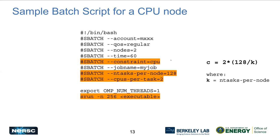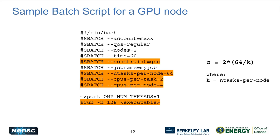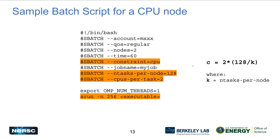For CPU nodes, change the constraint from GPU to CPU and adjust the tasks per node accordingly. CPU nodes have twice the cores — 128 hardware cores — so you'd set tasks per node to 128. Using the same CPUs-per-task formula with K=128 again gives C=2. However, if some jobs require fewer tasks per node to utilize threading (e.g., K=64), the formula gives C=4. Set this appropriately, otherwise you'll be under-utilizing the node and taking a performance hit.